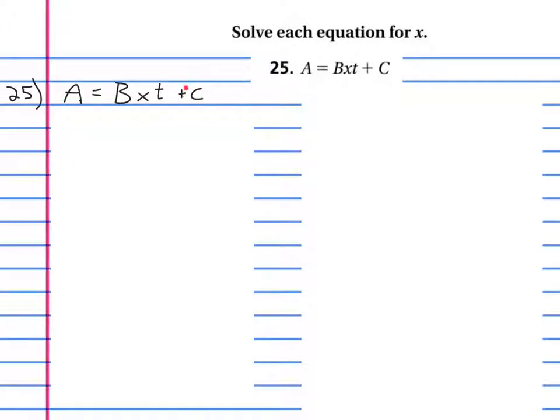We always want to undo those things that are added or subtracted first. So we're going to take both sides and we're going to subtract c away. Okay, so what was already there? a minus c. What was already there? b, x, t, plus c, minus c. We just wrote both things there with c subtracted at the end.